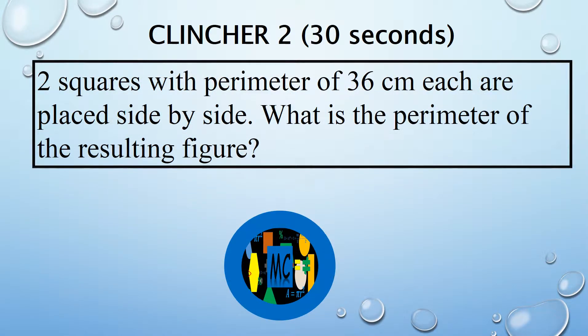Two squares with perimeter of 36 cm each are placed side by side. What is the perimeter of the resulting figure?